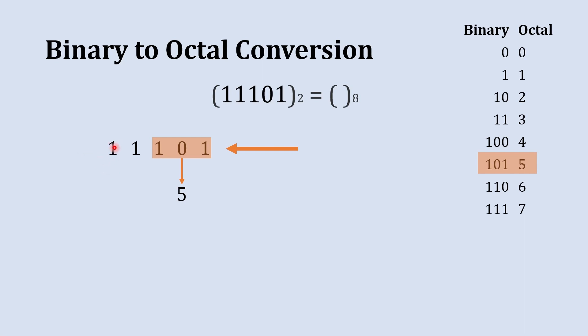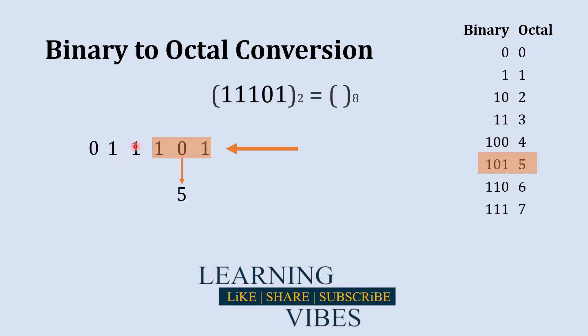You're supposed to add one more zero on the left hand side like this. Adding one more zero on the left hand side will not create any impact on the valuation of that binary number. So now here our set of three digits is ready: 011.